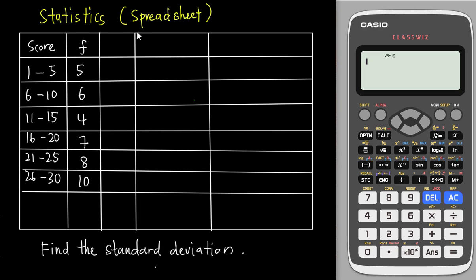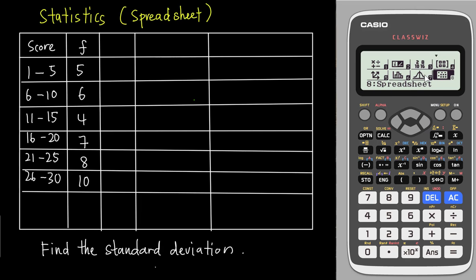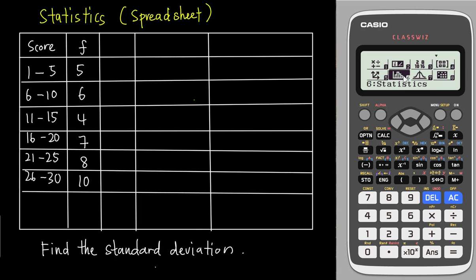In my previous video, I already taught you how to use the statistics function in this calculator to find the standard deviation. However, in this video I will focus on how to use the spreadsheet function. Some students might ask: since we already have the statistics button ready, why do we still need to use the spreadsheet function to find the standard deviation? The answer is very simple — if you use the statistics button, it will only tell you the final answer, like what's the standard deviation, the sum of f, sum of fx, and sum of fx².